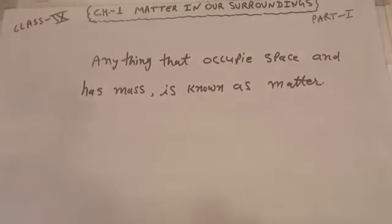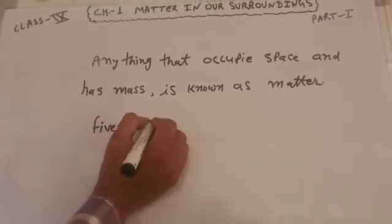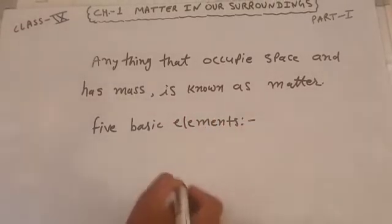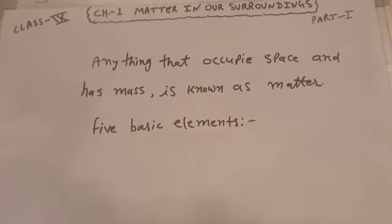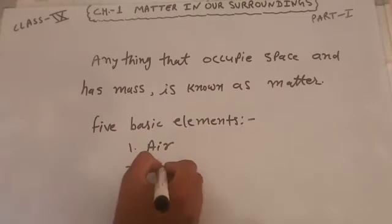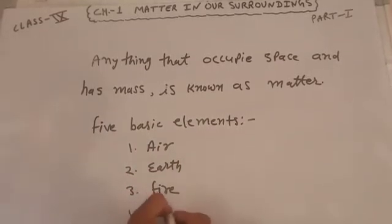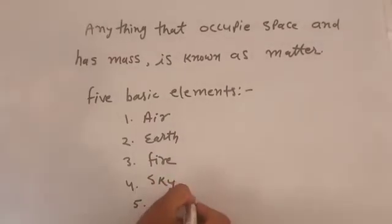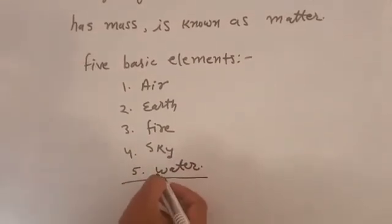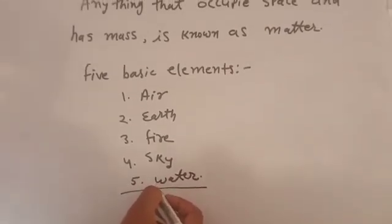Early Indian philosophers classified matter in the form of five basic elements. These elements are called panch tattva and they are air, earth, fire, sky and water. According to Indian philosophers everything, living or non-living, is made up of these five basic elements.